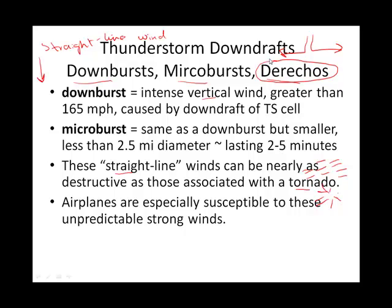That downdraft is plugging into strong winds at upper elevations and creating that vertical wind. Derechos are associated with a squall line that has very intense winds. Sometimes with derechos, they can look for something called a bow echo. What they're looking for in the radar of the squall line is for it to bow out, to show that it's interacting with some of that upper-level wind.